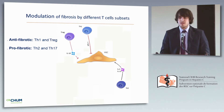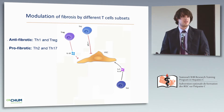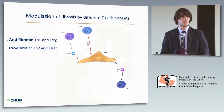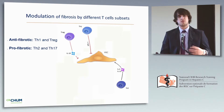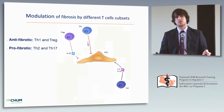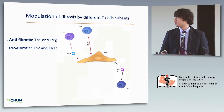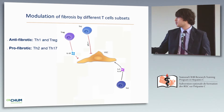Regulatory T cells can inhibit liver fibrosis through secretion of IL-10, which induces senescence of activated stellate cells. IL-10 was used in clinical trials to limit liver fibrosis, but no significant effects were obtained, meaning that other pathways can counteract its action or will be necessary to stop fibrosis in patients.